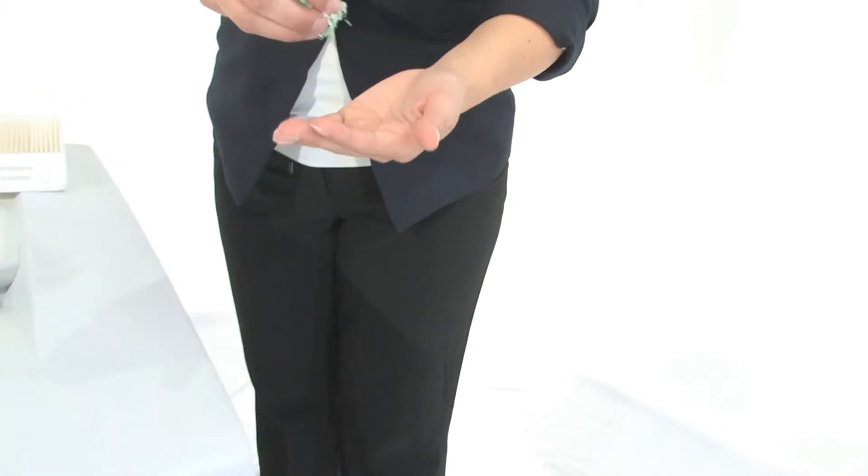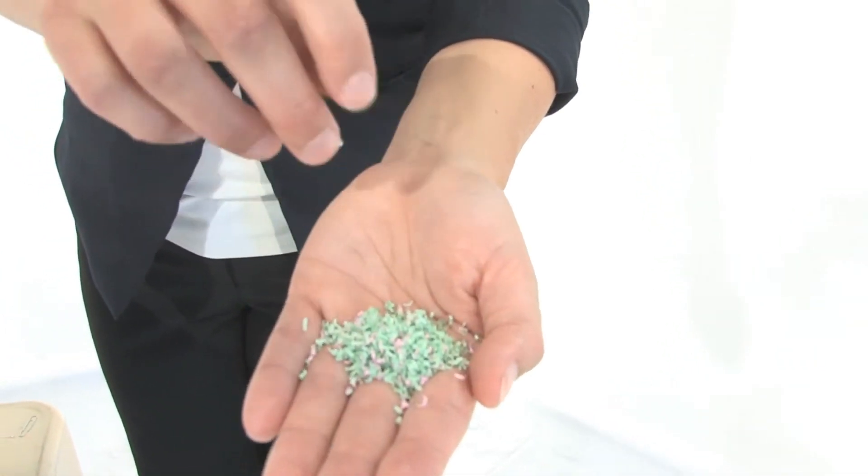Down here we have got a 30 gallon bin and this is what your shreds are going to look like. Look at these tiny little level 6 shreds.